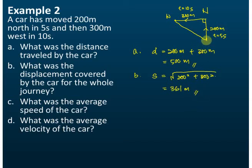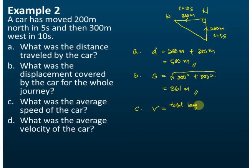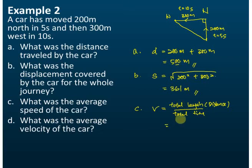How about part C? What was the average speed of the car? Average speed, symbol v, is equal to the total length divided by the total time taken. The total distance traveled is 500 meters. The total time taken is five seconds plus 10 seconds, which is 15 seconds. The answer is 33.3 meters per second.